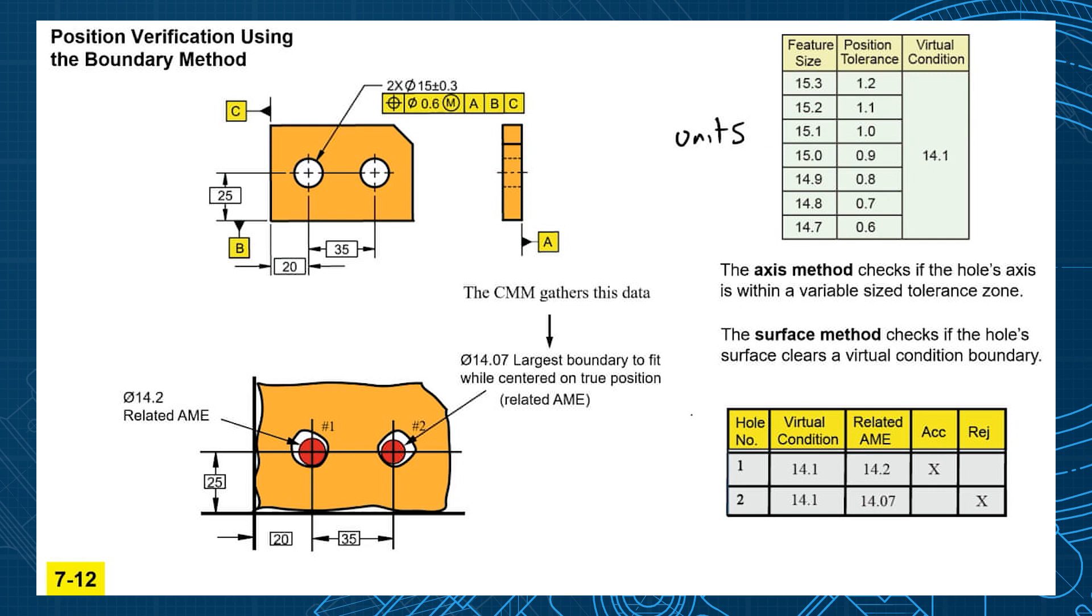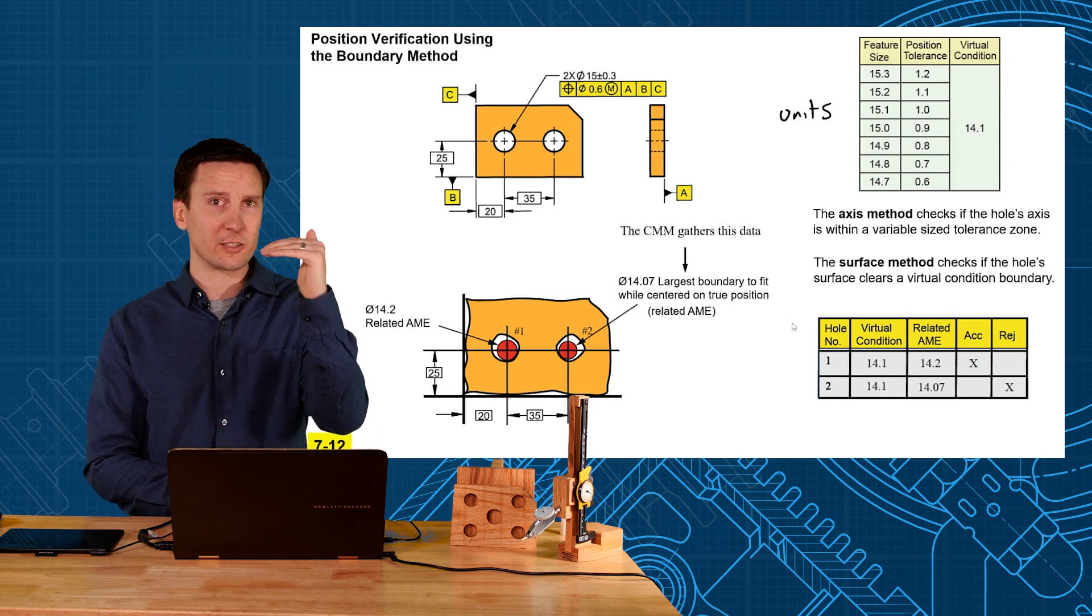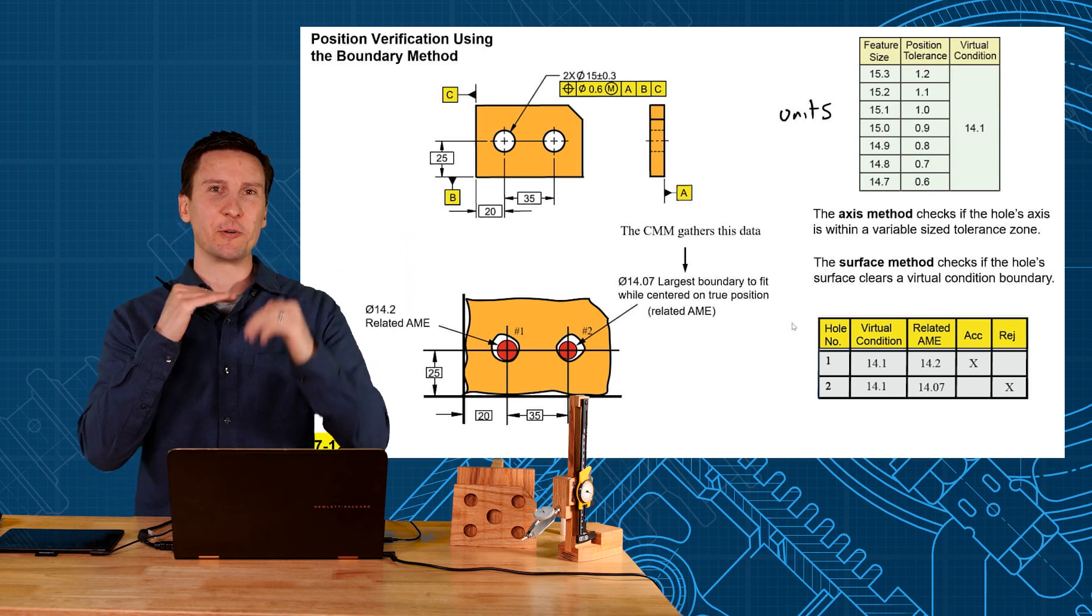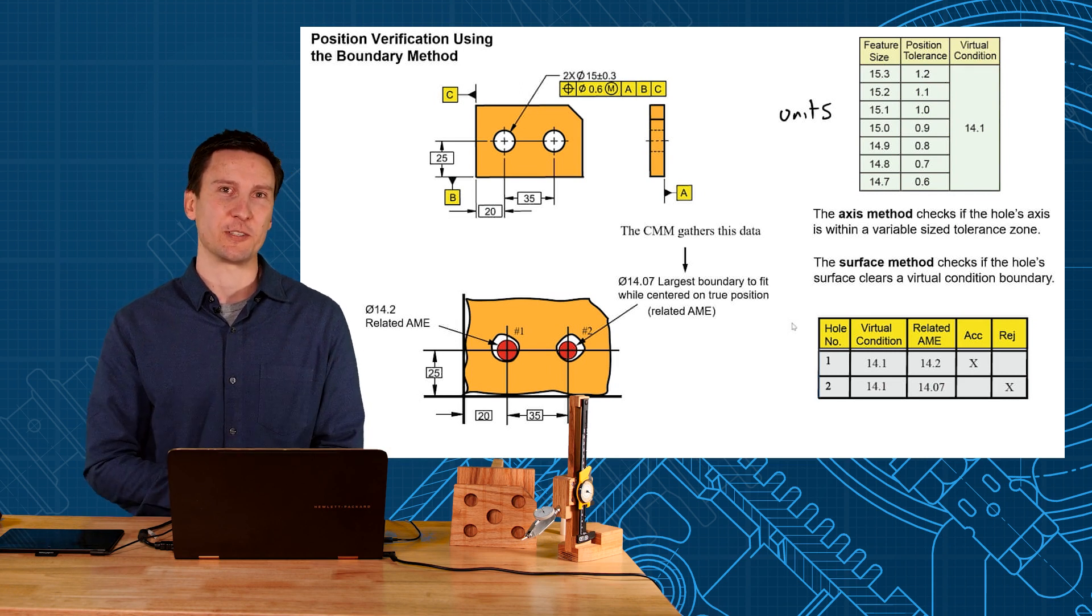Now the surface method just looks at a little difference. Instead of checking to see if the axis falls within this variable size tolerance zone, we check to see if the surface clears a virtual condition boundary. So there are two methods to verify the hole: axis method, which is most common, but there is new traction gaining in the world for surface-based measurement systems instead.